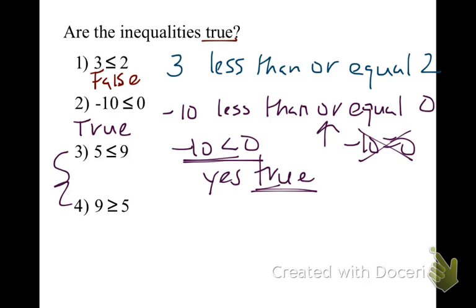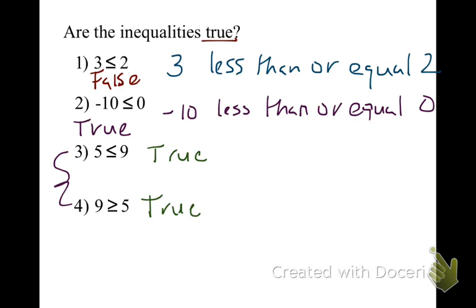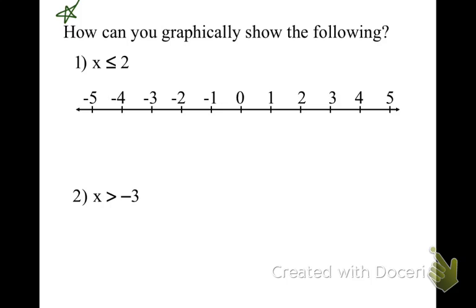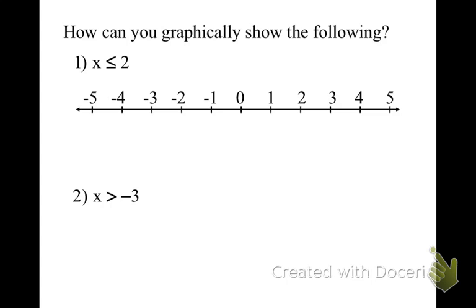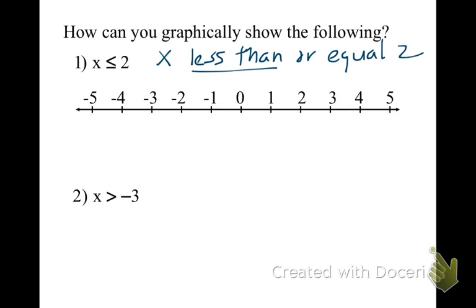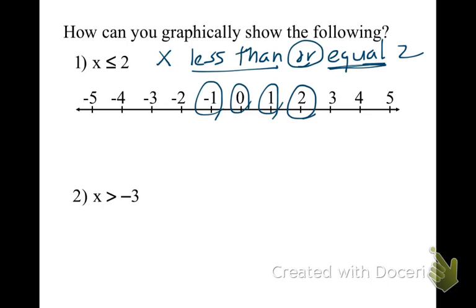In your table groups discuss what's the answer to three and four. If you're working at home, you should have gotten true for both of them. Now in your notes I need the directions and this graph. This is telling us x is less than or equal to 2. What does that mean? It means x has to be smaller than 2. One is smaller than 2, zero is smaller than 2, negative one is smaller than 2 — or it could also be equal to 2, so 2 is also a possible answer.